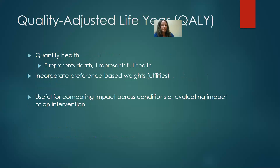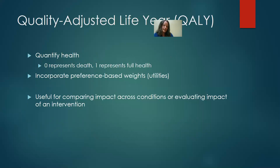Quality adjusted life years quantify health on a zero to one scale, where zero represents death and one represents full health. They incorporate those preference-based weights — which we call utilities — to adjust years of life given these utility ratings. We can use quality adjusted life years to compare the impact of conditions across diseases, across countries, across populations, and we can also use them to evaluate the impact of an intervention.